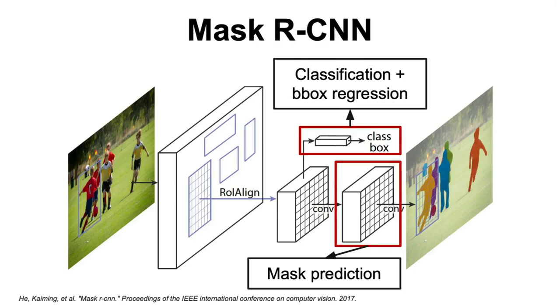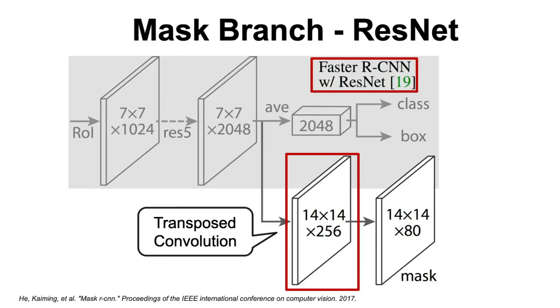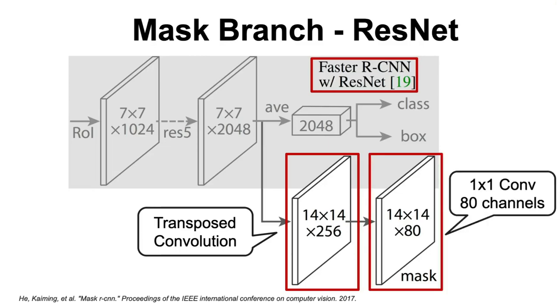There are two very similar variants for this branch, depending on the backbone convolutional network employed. For the ResNet backbone, the mask network architecture consists of a transposed convolutional layer followed by a 1x1 convolution with 80 channels, one channel for each possible mask in MS-COCO.